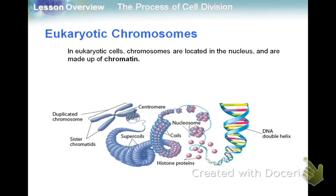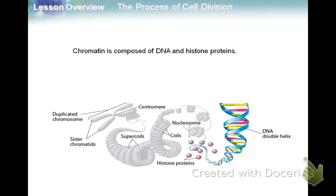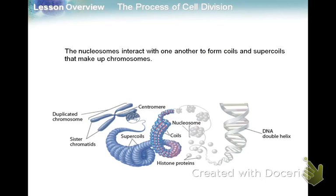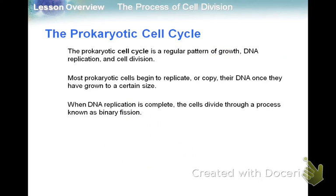Eukaryotes have more than one chromosome. They're found in the nucleus, and they're made up of what we call chromatin. Chromatin has DNA wound around proteins called histone proteins. That complex is called a nucleosome. Then, as you saw with the rubber band today — how I twisted it around — there's coiling and supercoiling, until we get to the full structure of the chromosome, made up of two sister chromatids.